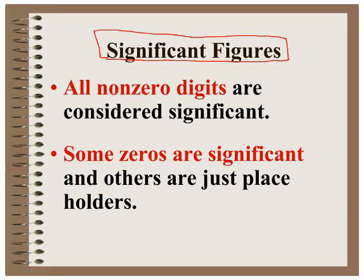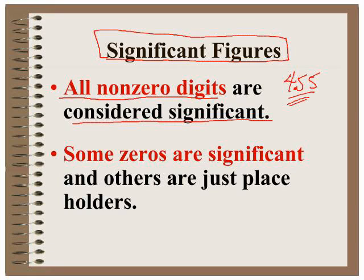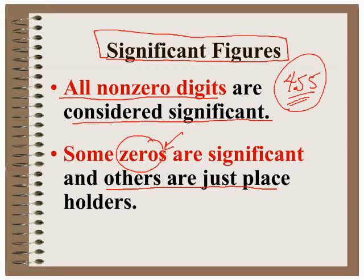Let's go through some of the basic rules. In a measurement, all non-zero digits are considered significant — they are part of your measurement. In those previous examples, the four, the five, and the five were all part of the measurement made off of that piece of equipment. It's only when we get to zeros that we have to worry about significant figures. Some zeros are significant; others are just placeholders. If it's a non-zero digit, it's definitely part of the measurement and it is significant.